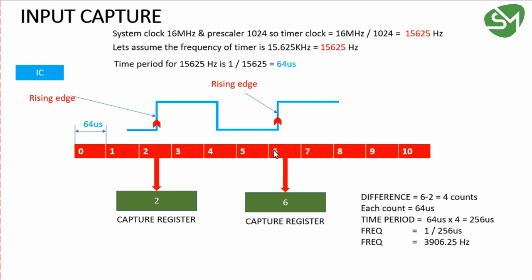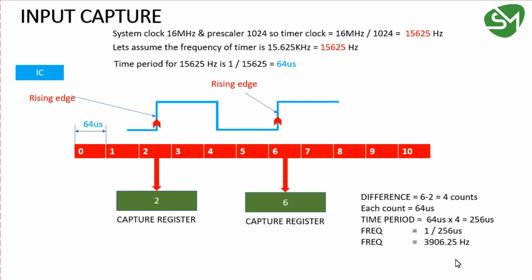This 256 microseconds is the time period of this complete wave. We got the time period, and for finding the frequency we can invert this: 1 divided by 256 microseconds is 3906.25 hertz. This is the frequency of the pulse given to the input capture pin.